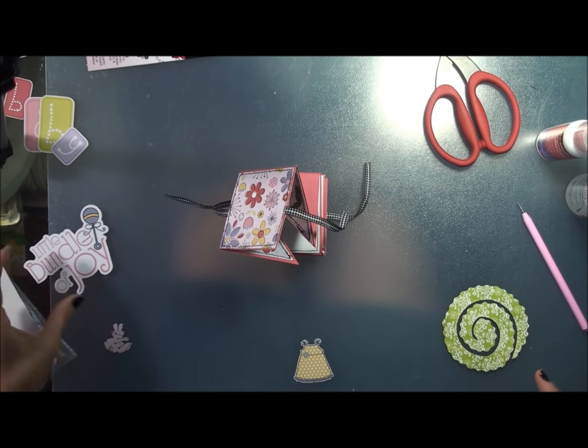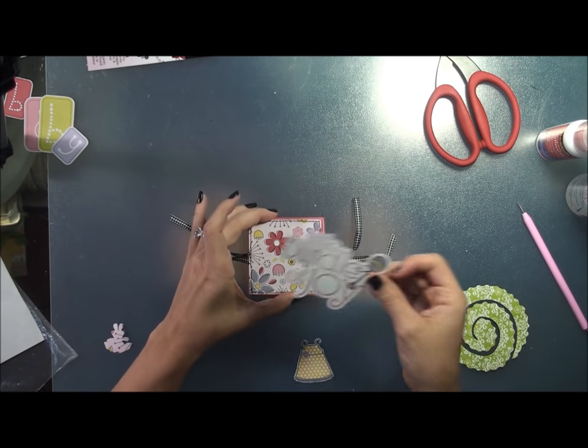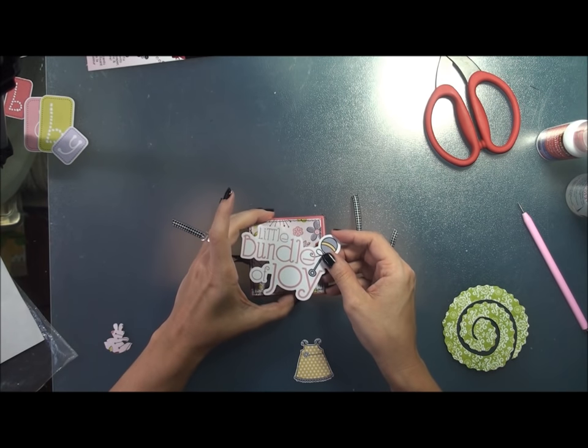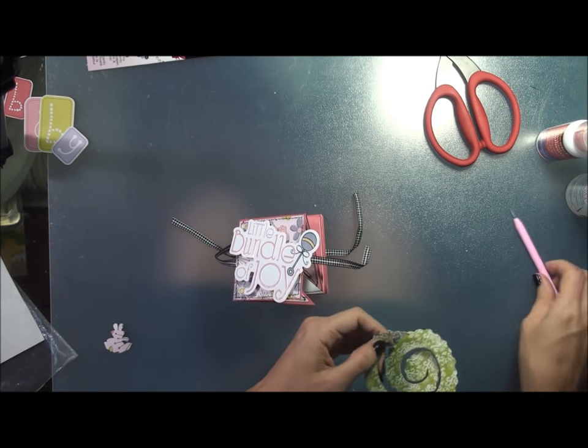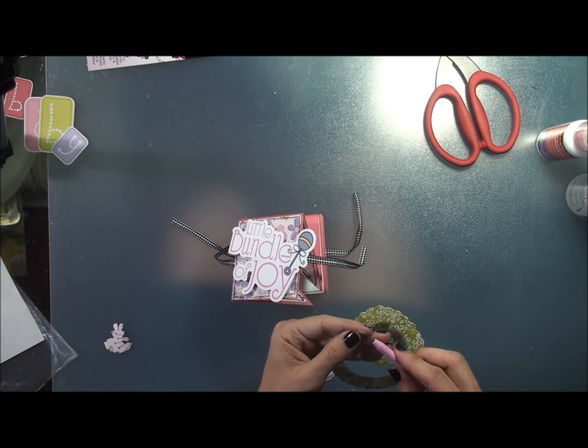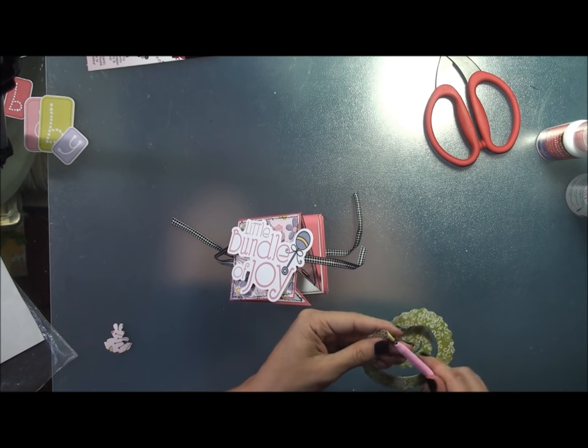Alright, so now it's time to decorate. I'm using these cute little die cuts that are with the Imaginus line. And I'll just adhere them right here. And then I also am going to use these rolly posies and my little petal roller to make a really cute little flower here.